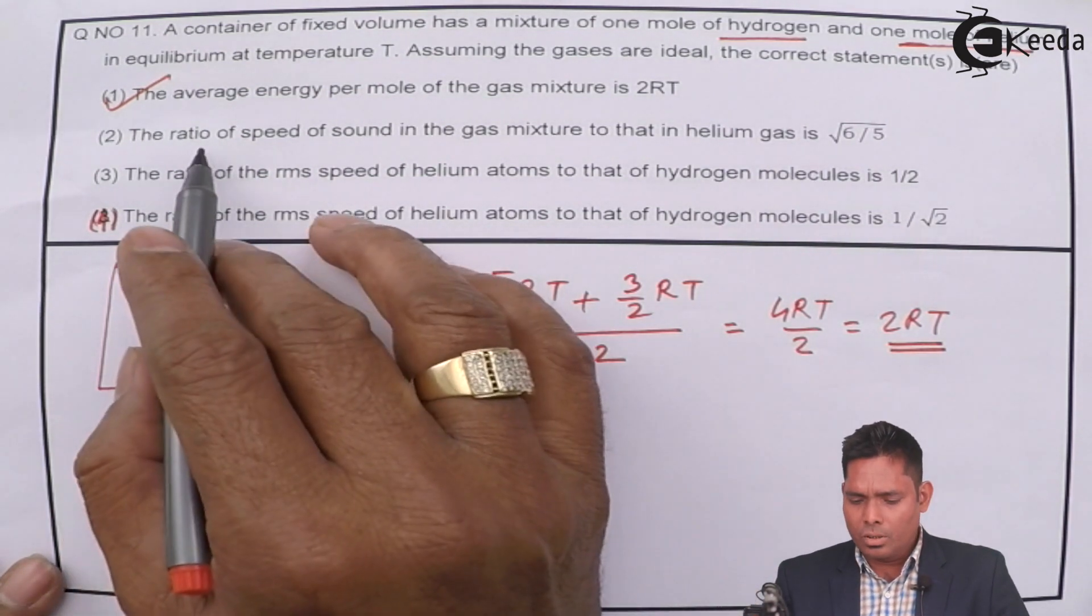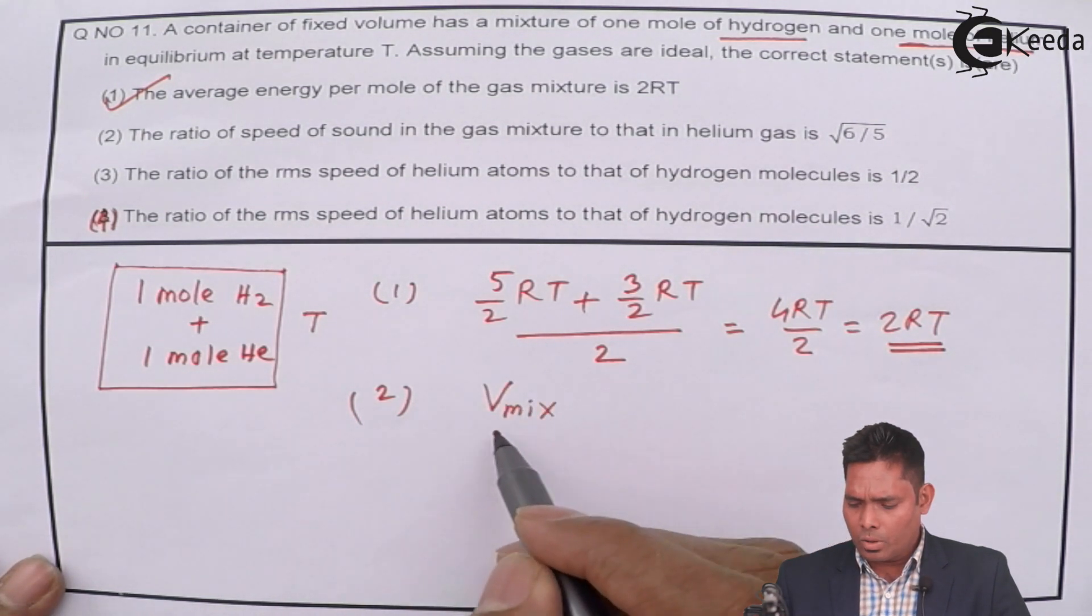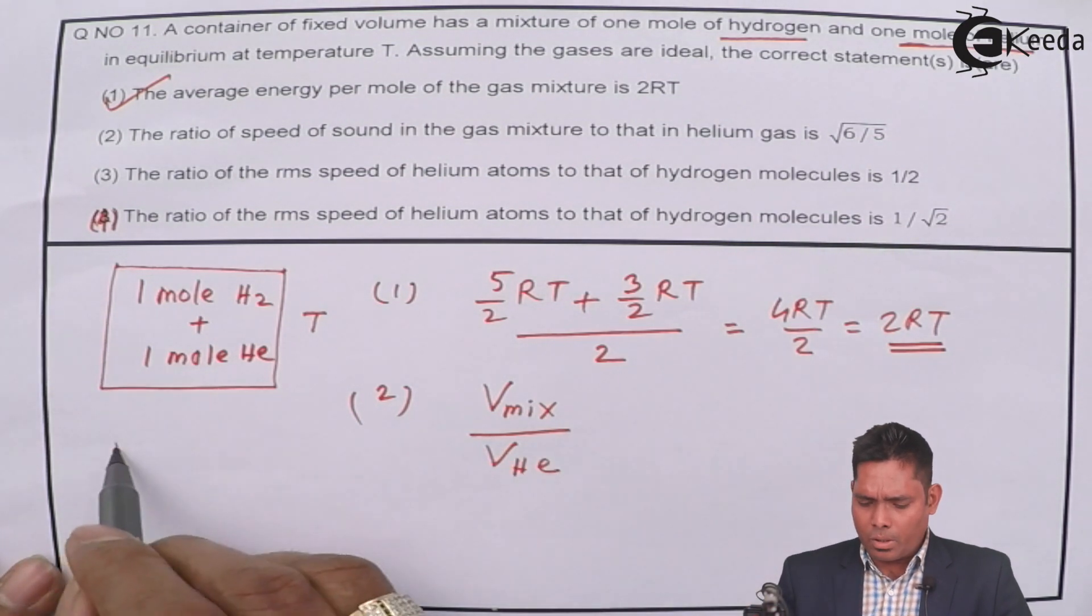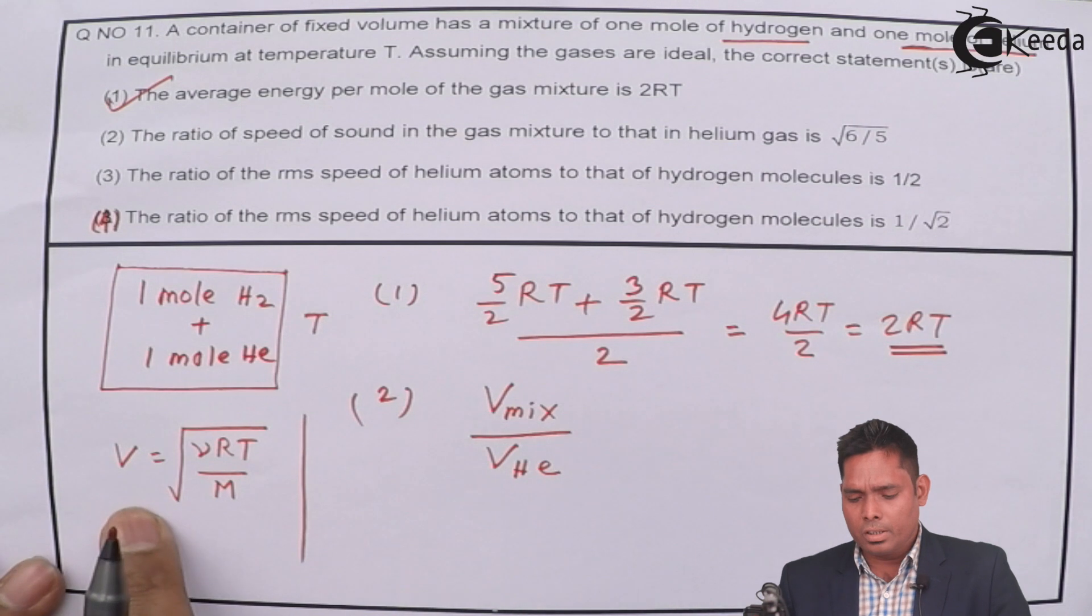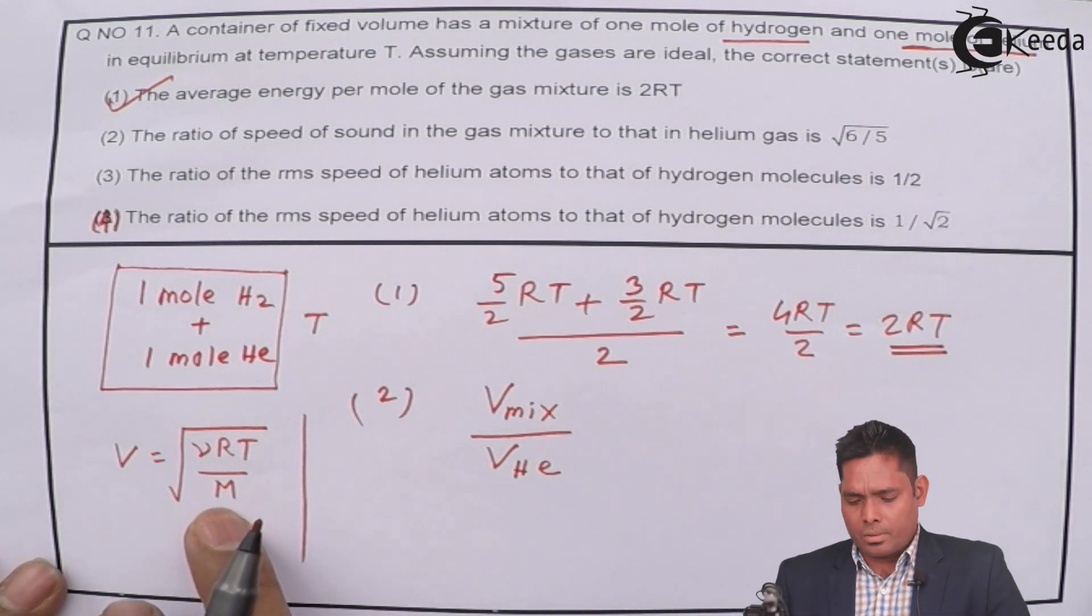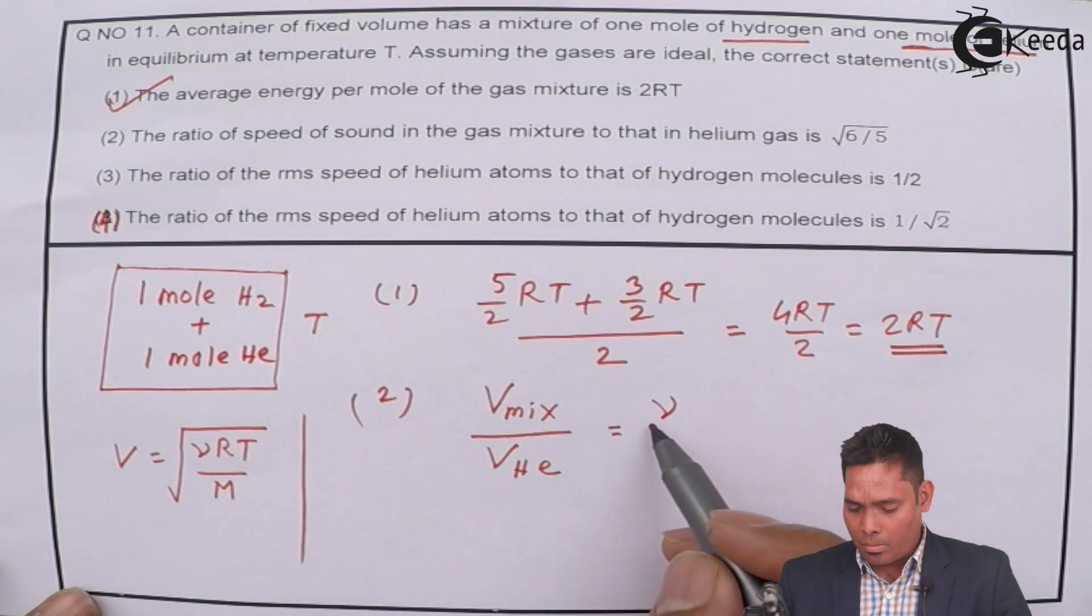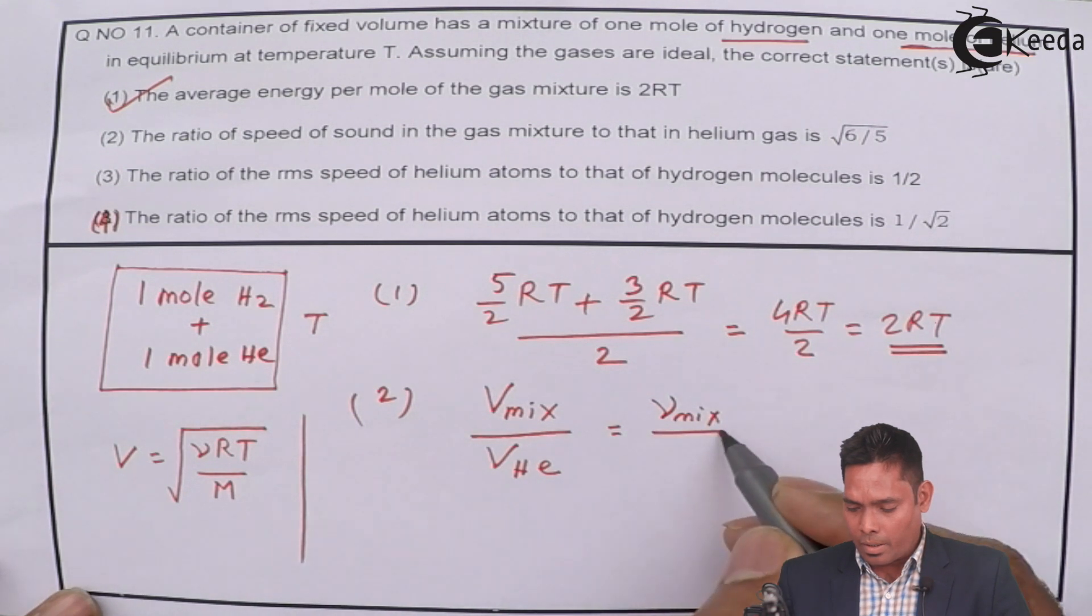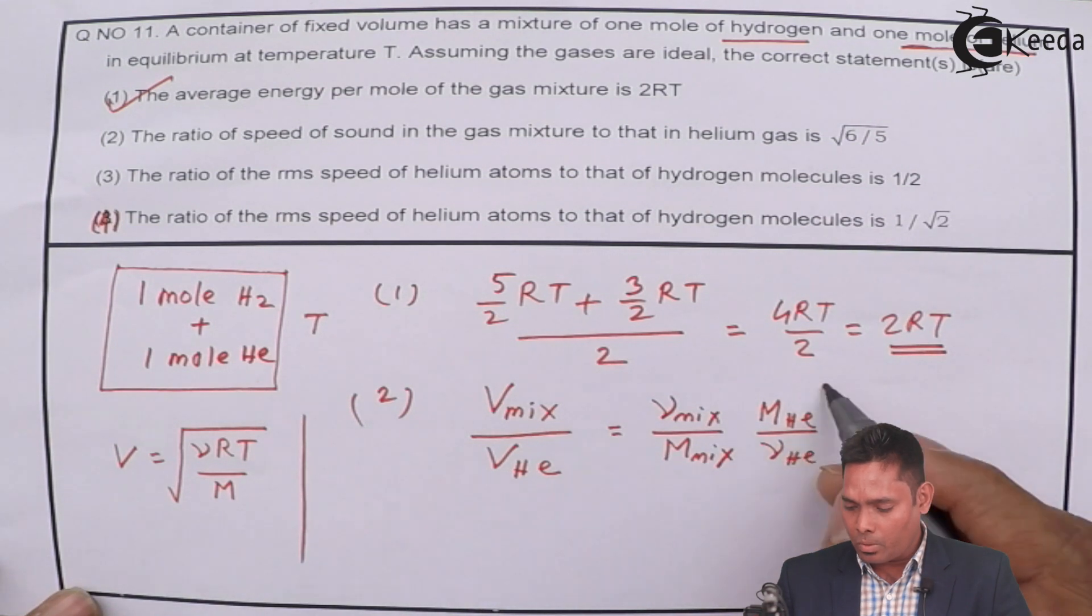The second option: the ratio of speed of sound in mixture to that of helium. Speed of sound is square root of gamma RT by M. This is the formula that we are going to use - the formula for speed of sound given by Laplace. Here R and T will remain the same and gamma and M will vary. So this will be proportional to gamma of mixture by molecular weight of mixture and molecular weight of helium by gamma of helium, under root. This is the formula to use.